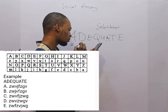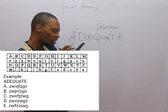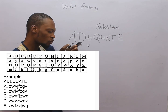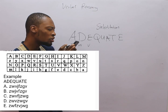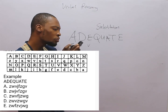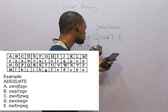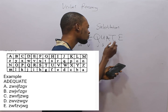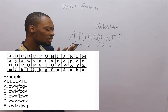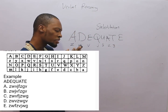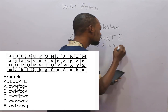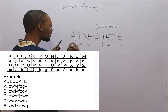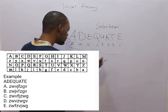Next, capital E — what is under capital E? Small v. Then capital Q — going to the table: O, P, Q — small j. Next, capital U — what is under capital U? Small f. Then capital A again — small z. The next is capital T — what is under capital T? It is small g. Finally capital E — small v. So 'ADEQUATE' can be represented in small letters as z, w, v, j, f, z, g, v — which is option A, the correct option.